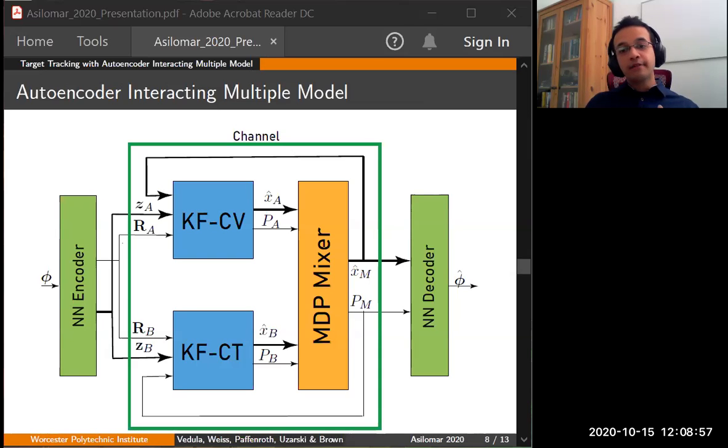However, in the case of AEIMM, we allow the encoder portion for different measurements and their associated measurement covariances for each of the two KFs in this IMM, KFCV and KFCT. These are represented by ZA and RA and ZB and RB. These are measurements and the corresponding measurement covariances. The primary motivation for this feature is that learning different measurements and associated measurement covariances for each KF in the IMM will assist the Markov transition process mixer in weighing the appropriate KF.